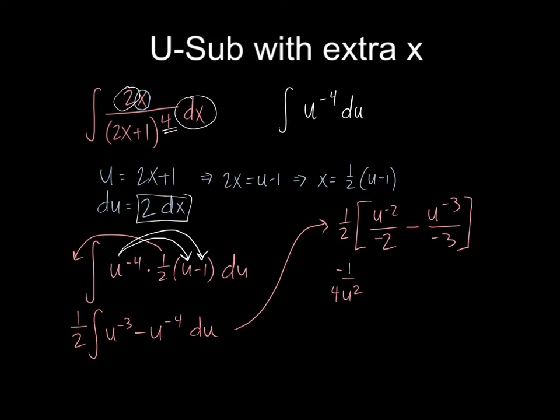And then I'm also going to move this u to the negative two down and make it u to the positive two on the bottom. Then my next term is going to be positive and it's going to be one sixth because of the two and the three both in the denominator. And I'm going to make that six u cubed on the bottom. So this is what I get when I integrate, but I'm still in the land of u's and I need to get back to x's.